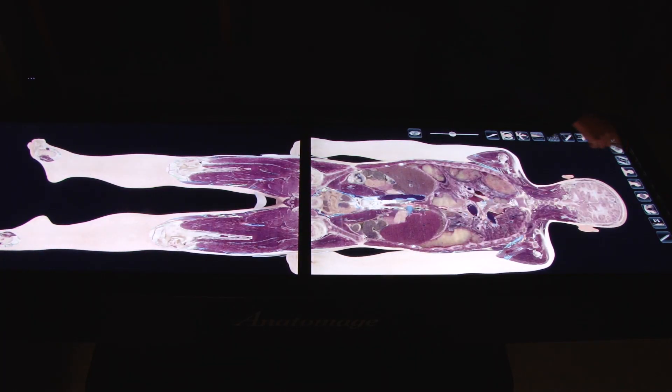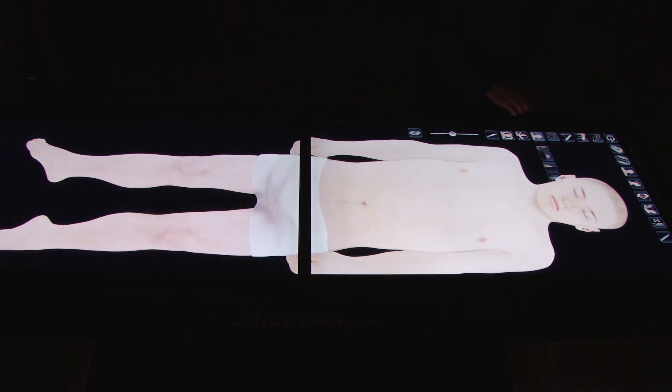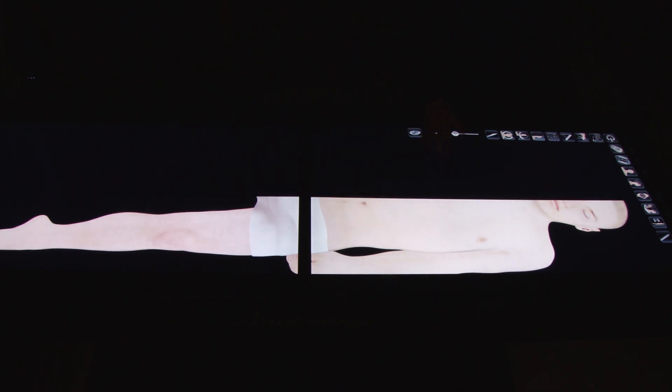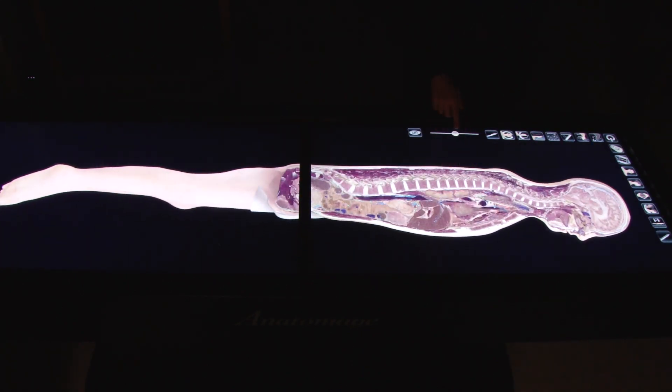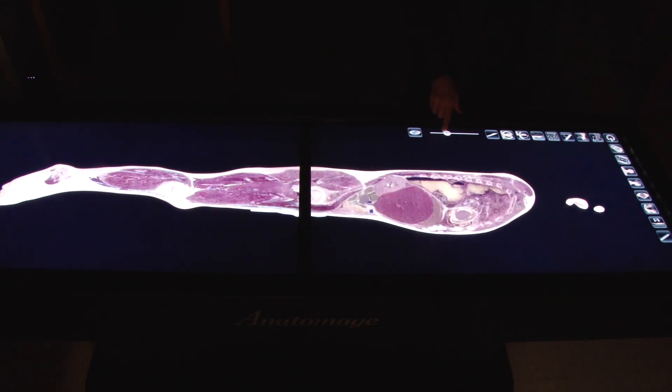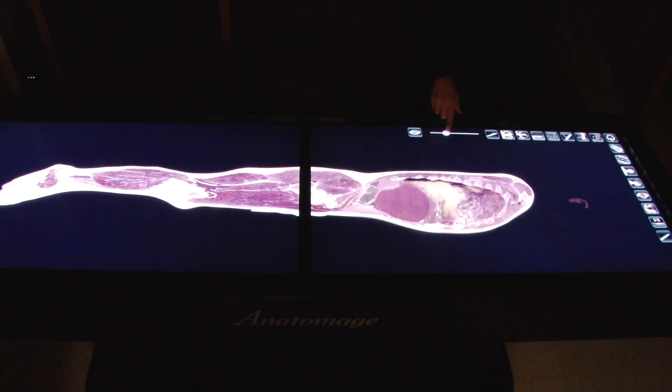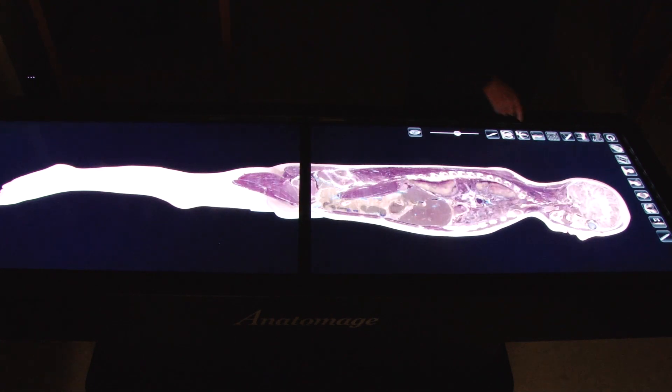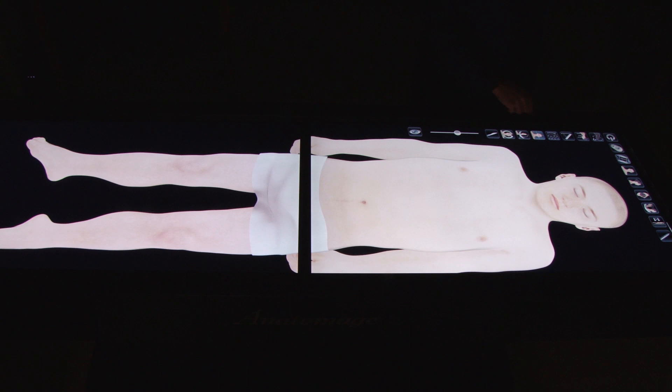Here at McHenry County College, our students enrolled in human anatomy and physiology have the opportunity, at the touch of their fingertips, to slice the human body in all different planes – transverse, sagittal, oblique, coronal sections – and scroll through the slices along those planes.